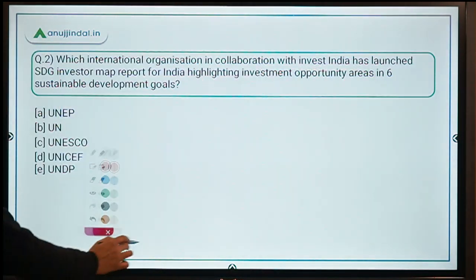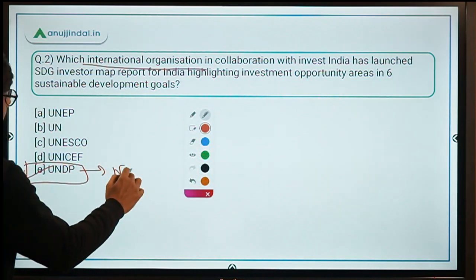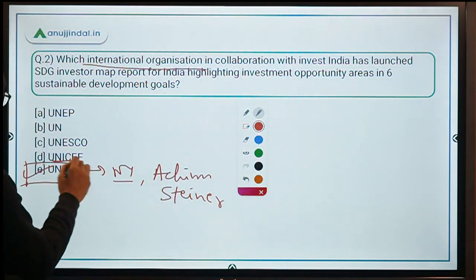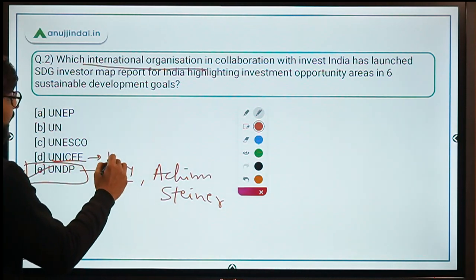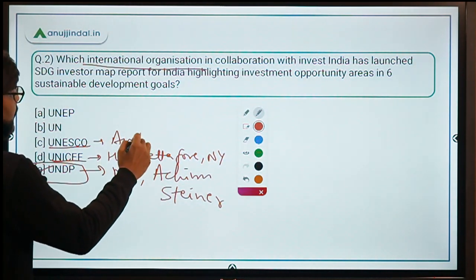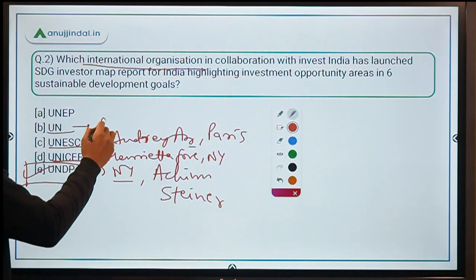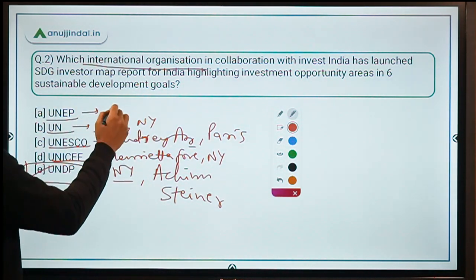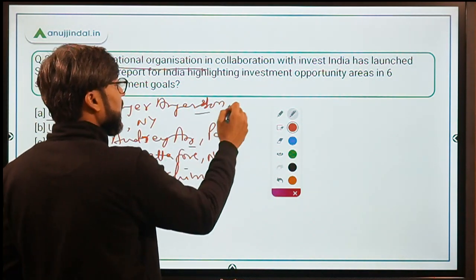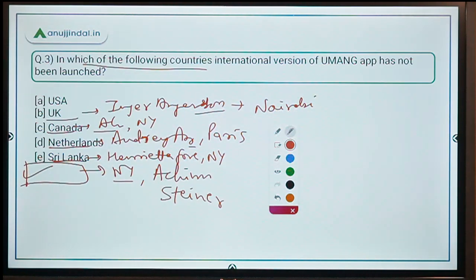The correct answer is UNDP - United Nations Development Programme, headquartered in New York, currently headed by Achim Steiner. Other key UN organization heads: UNICEF is headed by Henrietta Fore, also headquartered in New York; UNESCO is headed by Audrey Azoulay, headquartered in Paris; the UN is headed by Antonio Guterres, headquartered in New York; and UNEP is headed by Inger Anderson from Denmark, headquartered in Nairobi.